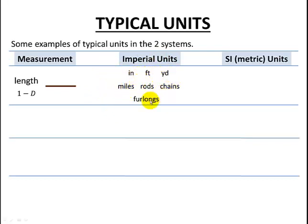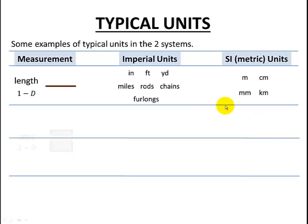Rods, chains, and furlongs — furlongs you might know from horse racing. In the metric system, we'll have meters, centimeters, millimeters, and kilometers, and again there are quite a few more.